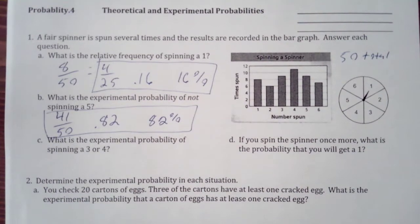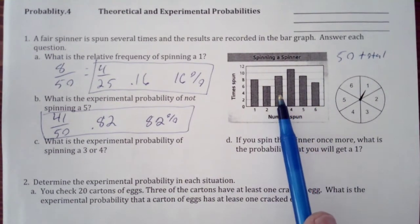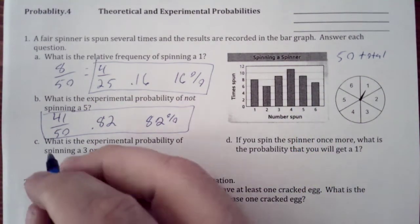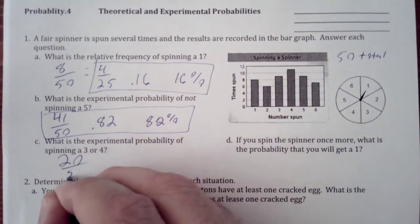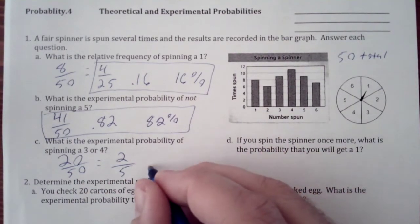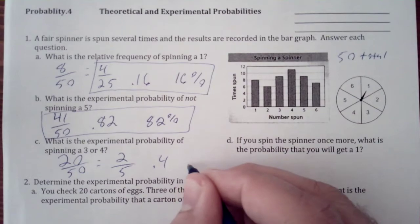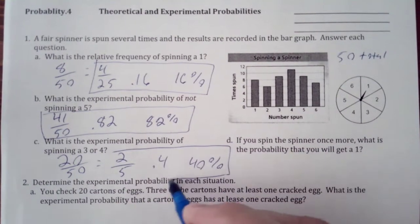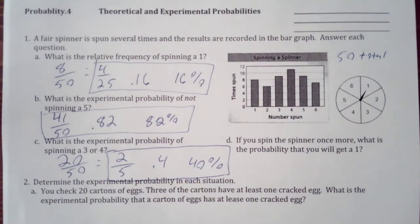What is the experimental probability of spinning a 3 or 4? We have 9 and we have 11, so that would be 20. So we have 20 over 50 or 2 fifths, which is 0.4 or 40%. So any one of those would be answers to that problem.